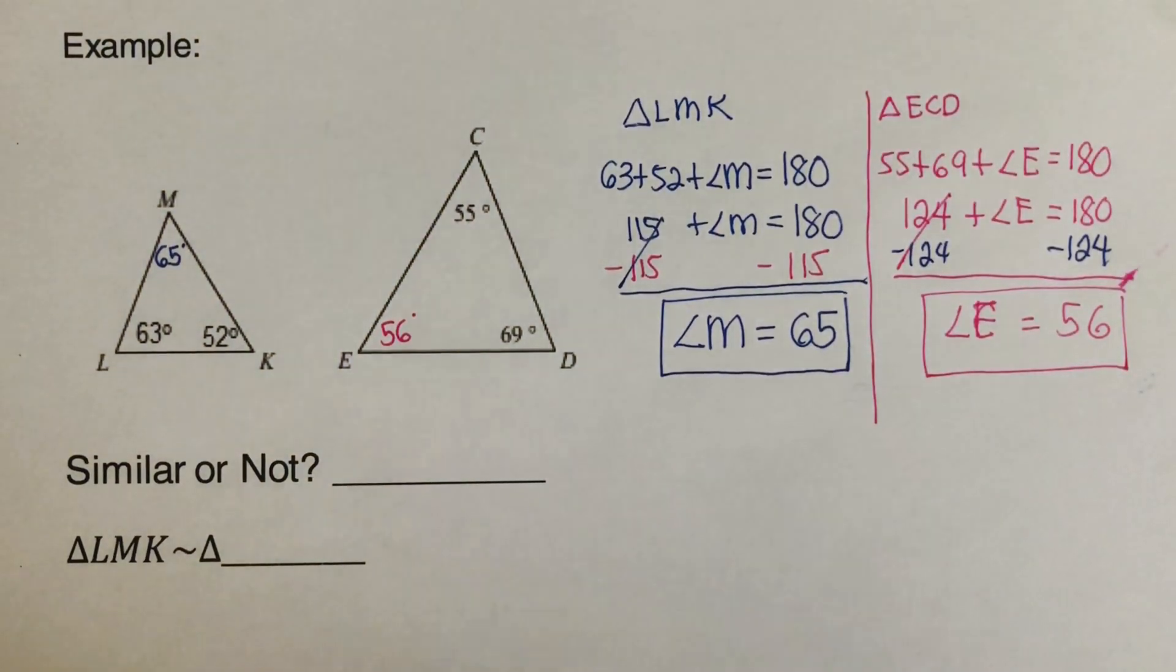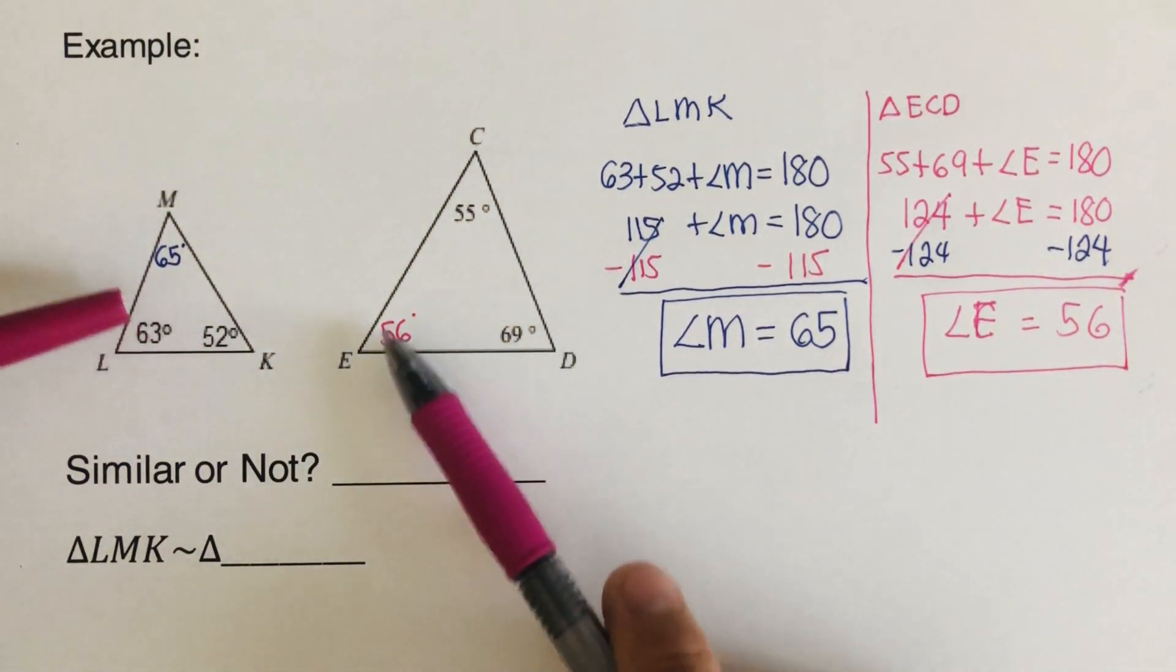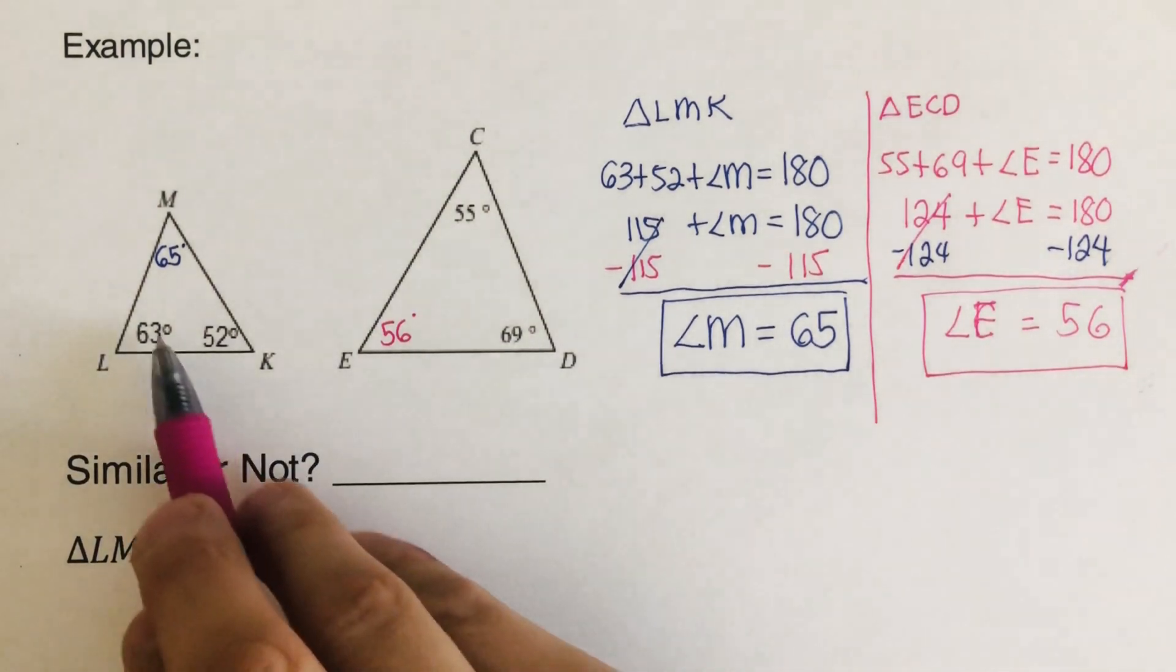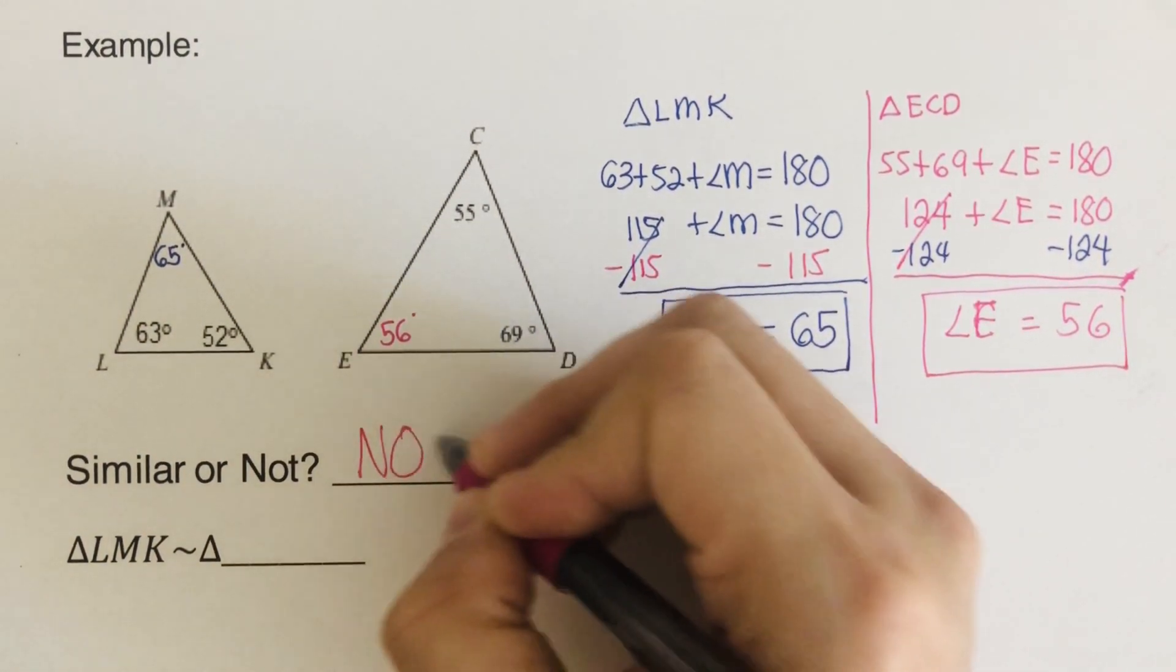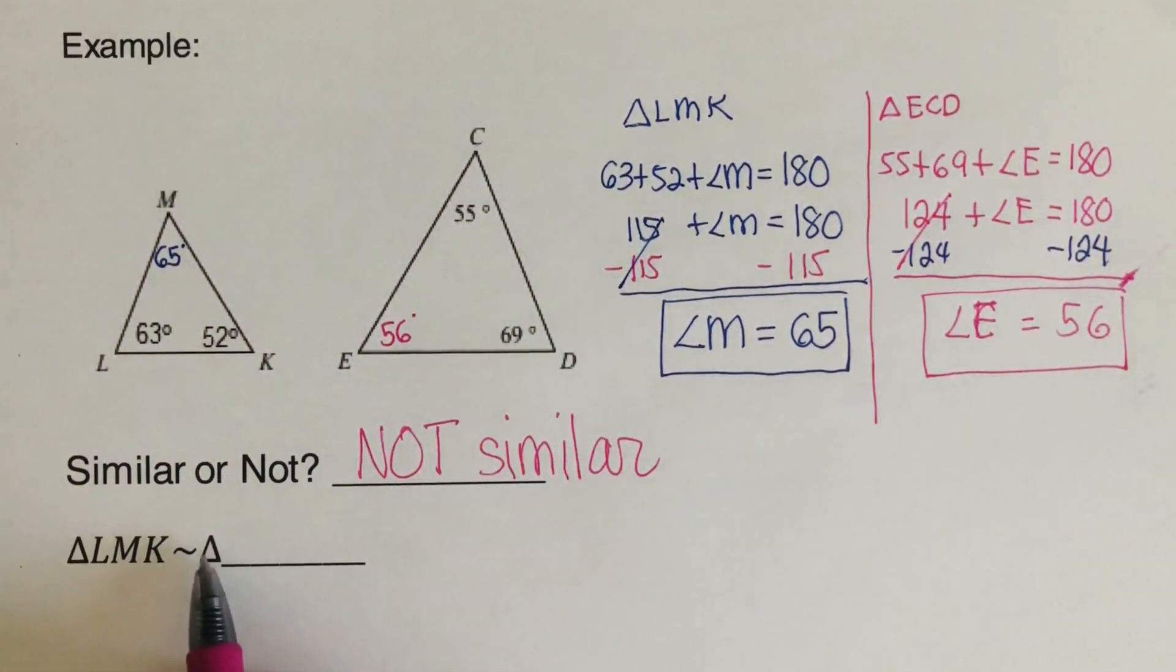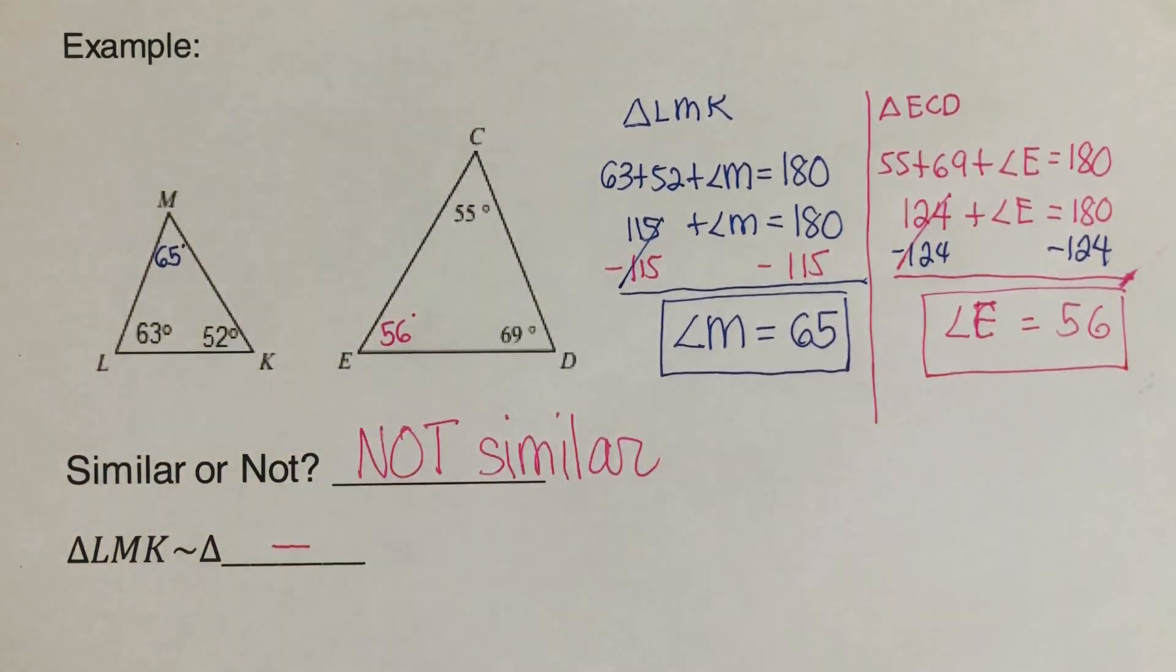So from here, we do not have any angles that are congruent. Did you get 65 and 56 for the work on this problem here? Good. Now, what can we conclude over here? Are they similar or not similar? Since we don't see any angles that are congruent, we go ahead and say, this is not similar. If it is not similar, you don't need to write the similarity statement because it is not similar.